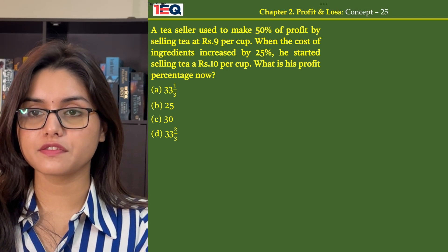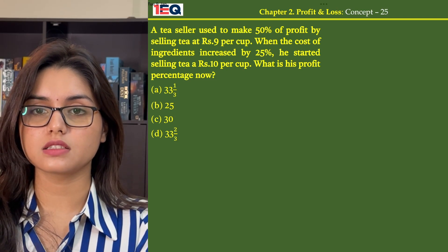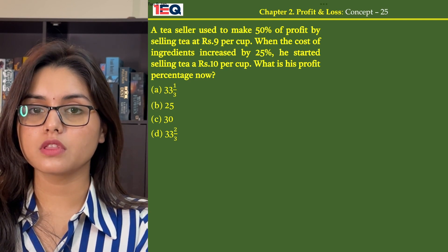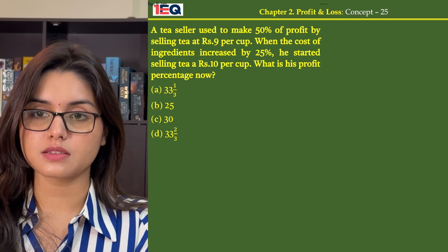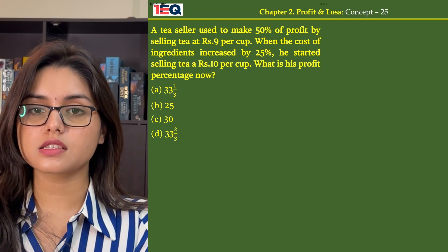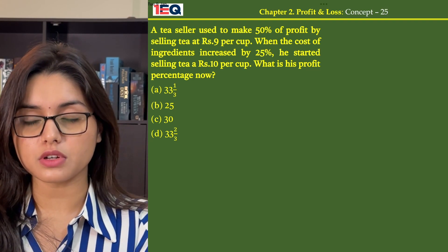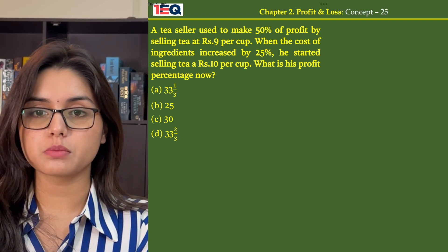The tea seller used to make 50% profit by selling tea at Rs. 9 per cup. When the cost of ingredients increased by 25%, he started selling tea at Rs. 10 per cup. What is his profit percentage now?